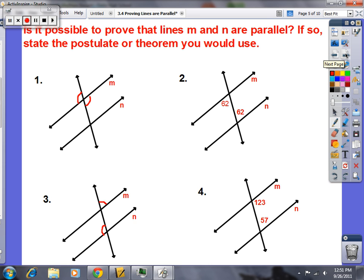If it is possible to prove the lines M and N are parallel, so it's a yes or no. Now, if it's a yes, you've got to reference the theorem. So, look at number one. It's a yes or no. My question is this. Is line M parallel to line N? And here's your congruence marks right there. So, do these congruence marks down the line, do they mean that line M and N are parallel? It's either yes or no.